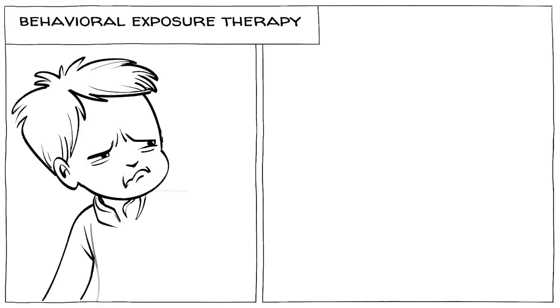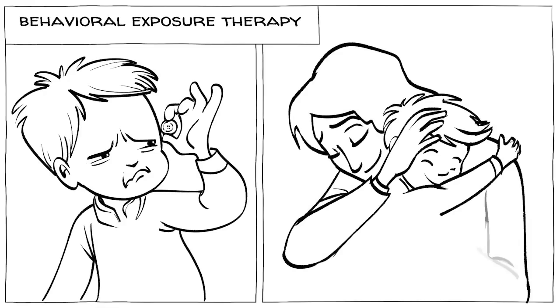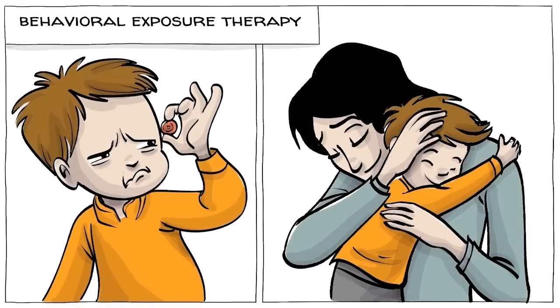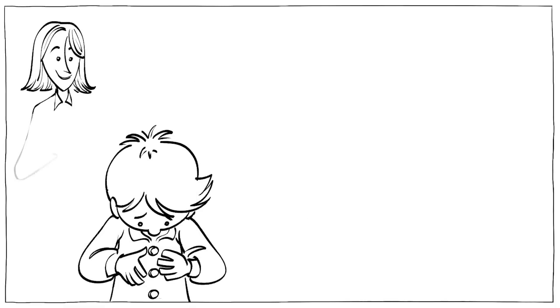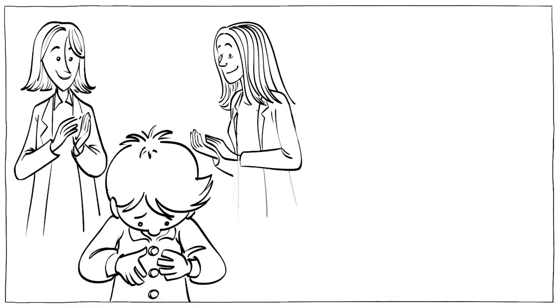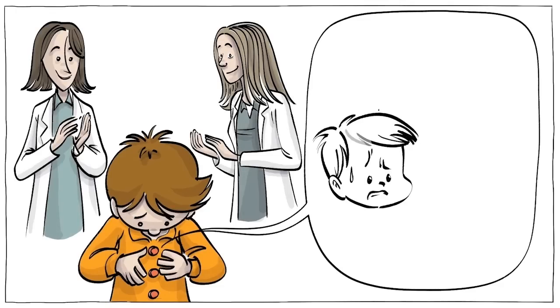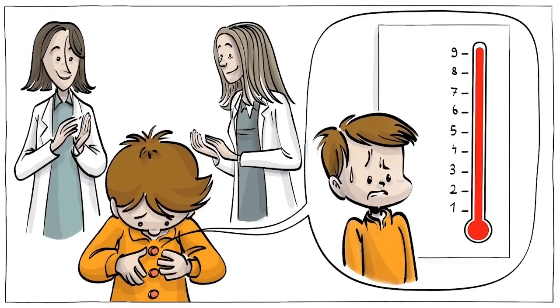First they tried behavioral exposure therapy, a form of classical conditioning. Whenever the boy touched a button successfully, he was rewarded. They then repeated the process in various forms. After four sessions, the boy completed all tasks and he was able to interact with way more buttons than before. However, he felt more distressed about buttons than ever.